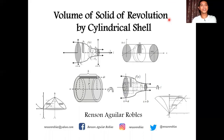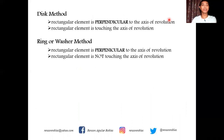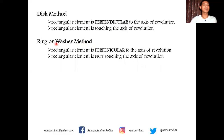Hello everyone. This is the third part of my lecture series on volume of solid of revolution. In my previous two videos, I showed you how to find the volume of a solid whenever you take an element perpendicular to the axis of revolution. When the element chosen is touching the axis, we use the disk method, and when it is not touching the axis, we use the ring or washer method.